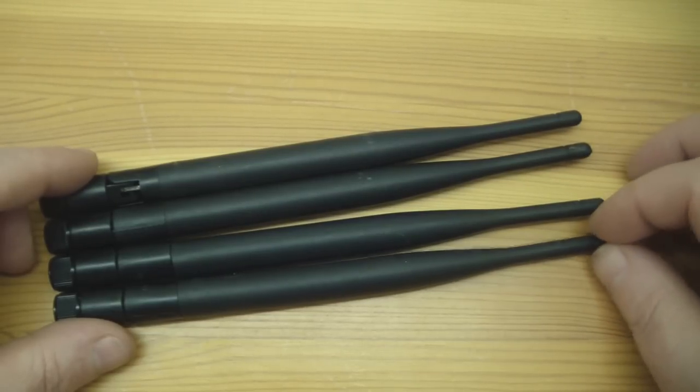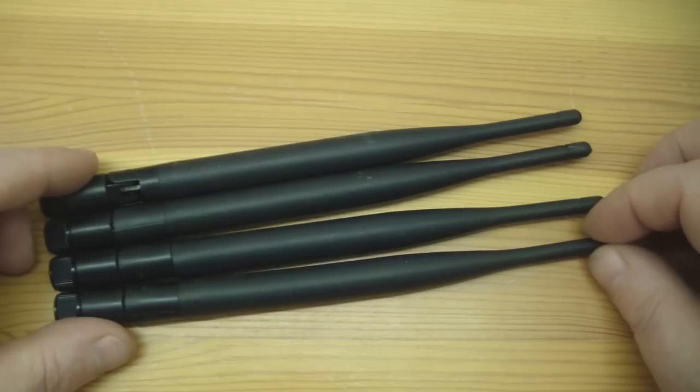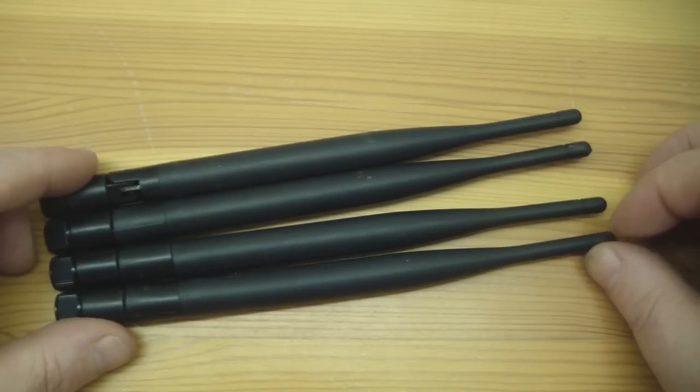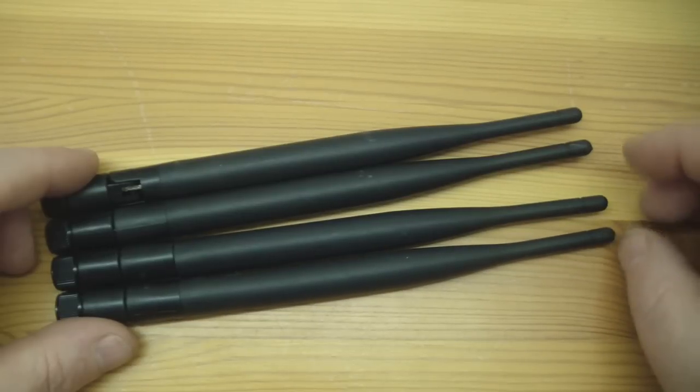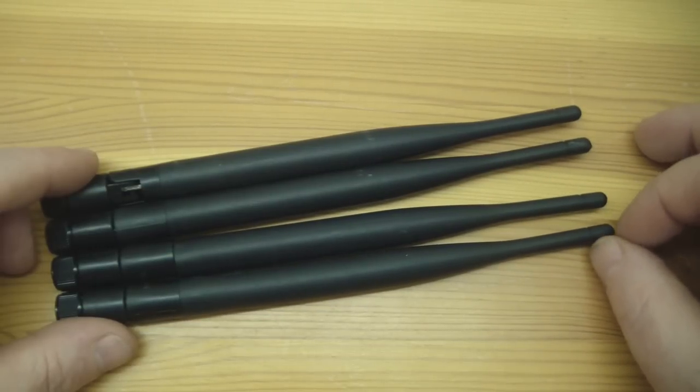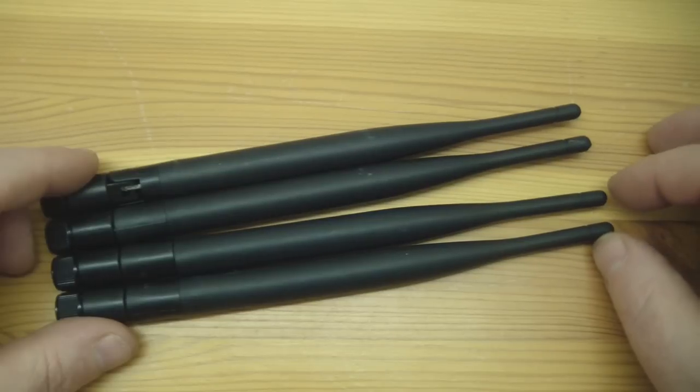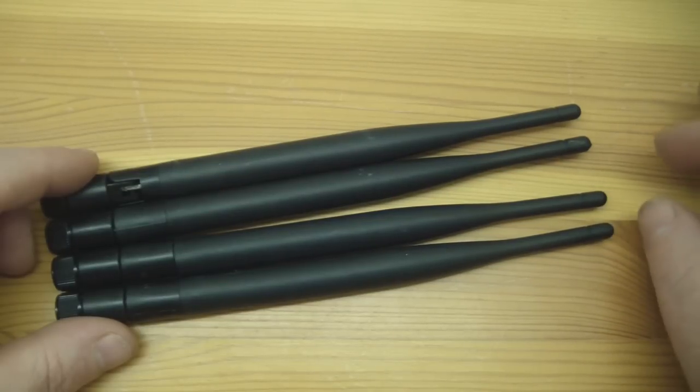Now the 5 GHz antennas I was looking at buying online were extremely expensive, I couldn't find them cheap anywhere. But 2.4 GHz dipoles, I managed to get 50 of these for 35 pence each plus free shipping. So what I thought I'd do is buy extra of the 2.4 GHz and modify some down to the 5 GHz band.